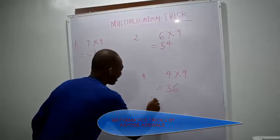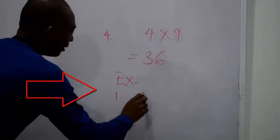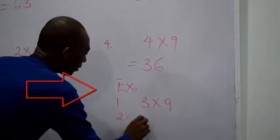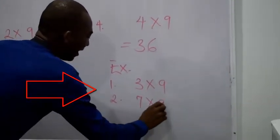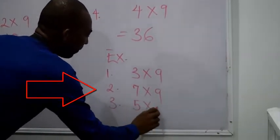I am going to leave you with this exercise. Just do this and send your answer under the comment box. Number 1, 3 multiplied by 9. Number 2, 7 multiplied by 9. Number 3, 5 multiplied by 9.